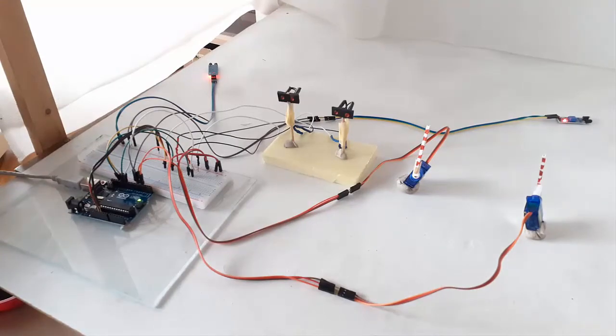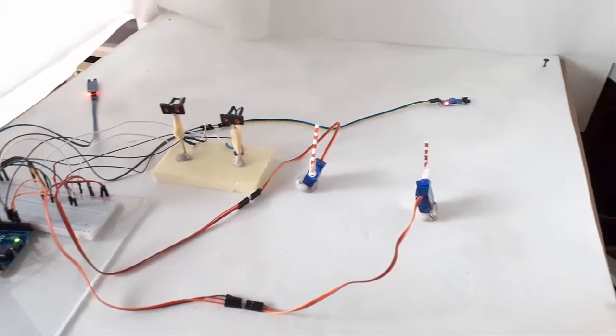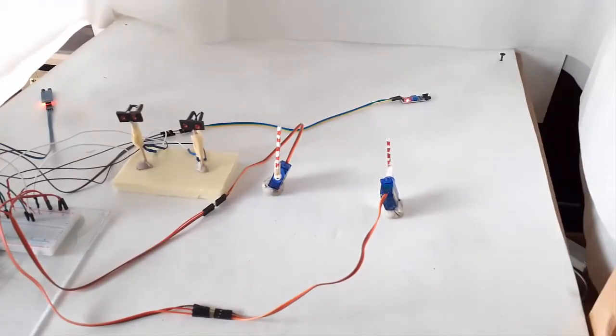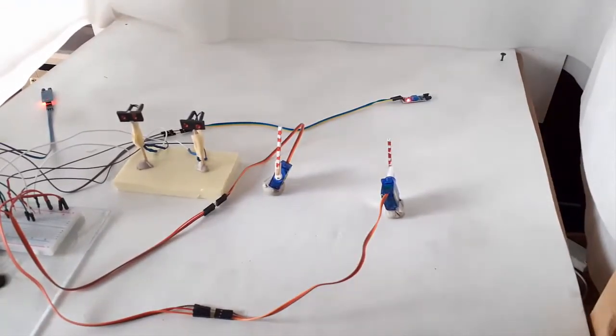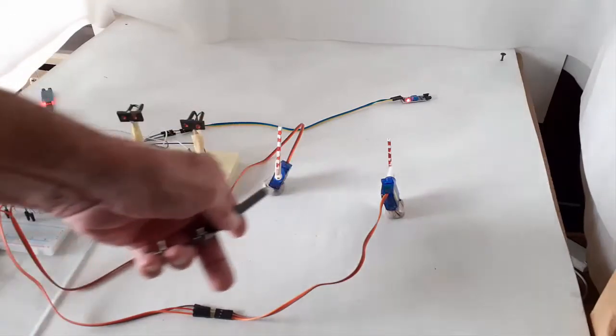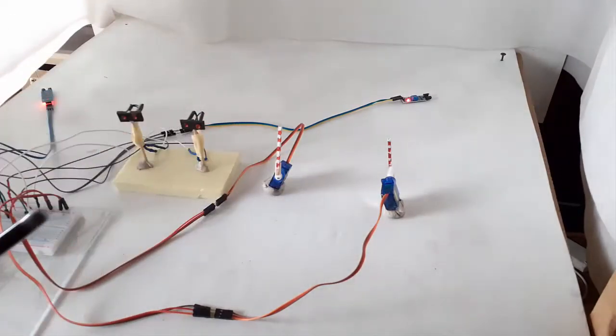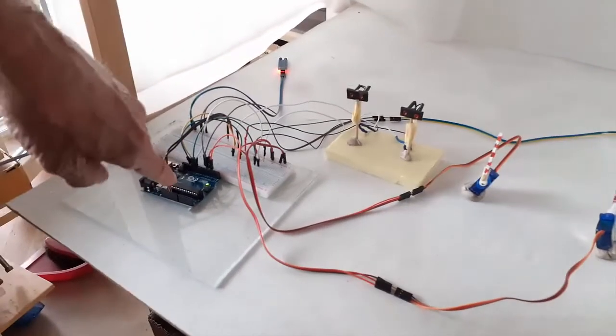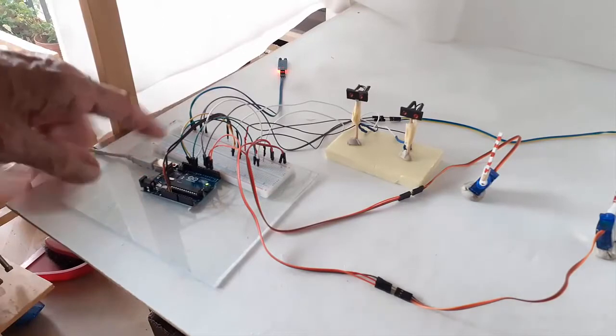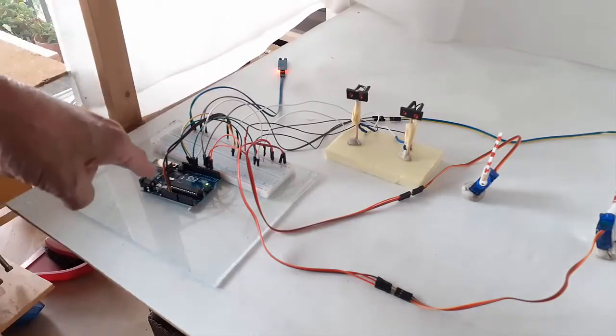I also will have the actual crossing gates as I make them and the lights with the plans, etc., linked through that video. I'm going to use this, this is an Arduino Uno.